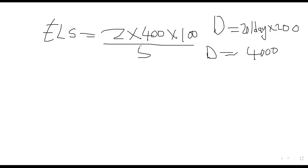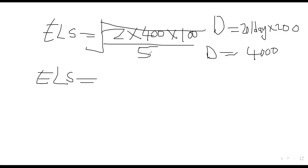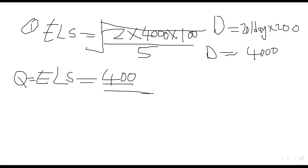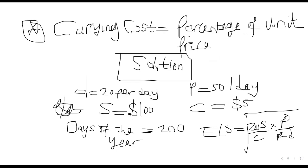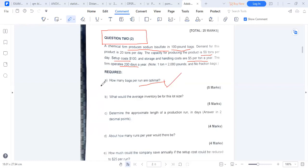Substituting: ELS = square root of (2 × 4,000 × 100) / 5 × (50 / (50 − 20)). This gives us Q = 400 tons. Economic Load Size is 400. All other answers will be straightforward once this first one is correct.